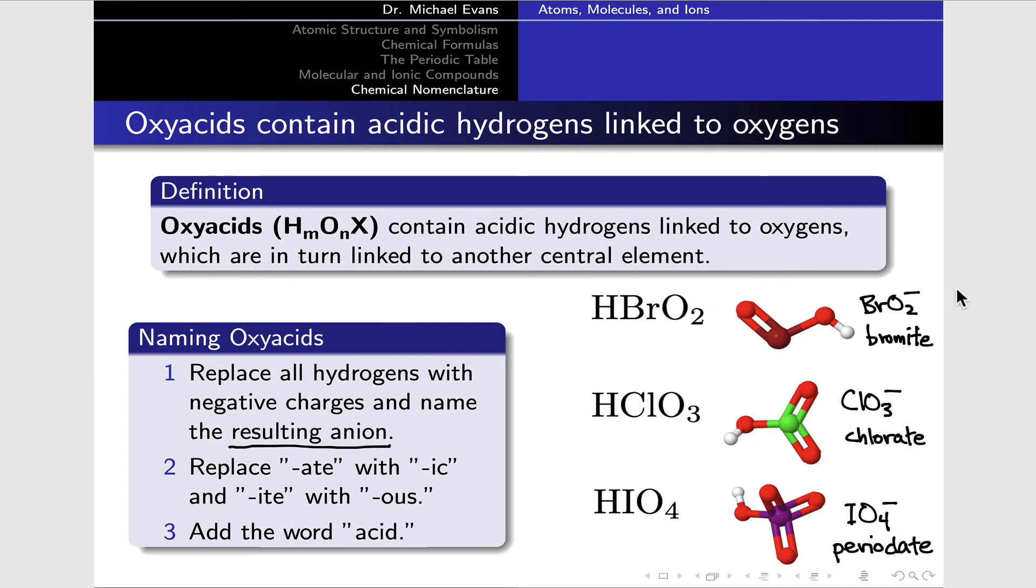And to name the resulting acids - the compounds in which we add that proton back - we replace the suffix with a specific suffix for the acid. So if it's 'ite,' we replace with 'ous,' so this acid would be called bromous acid. HClO₃ has 'ate' on the end. 'Ate' is replaced with 'ic,' so this would be called chloric acid. And finally, 'ate' again is replaced with 'ic,' and the 'per' stays on, so we would call this periodic acid. So three examples of naming oxyacids. You'll see these names in various places throughout your study of chemistry, and they do follow a system in terms of being related to the polyatomic anions that we get if we replace the hydrogens with negative charges.